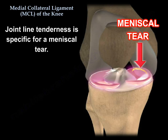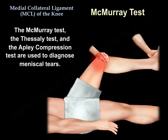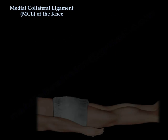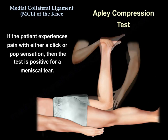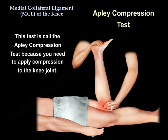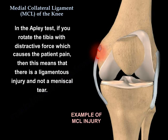Sometimes it is hard to differentiate between an MCL tear and a meniscal tear. Joint line tenderness is specific for meniscal tear. The McMurray test, the Thessaly test, and the Apley compression test are used for meniscal tears. With the Apley compression test, if the patient experiences pain with a click or a pop, the test is positive for meniscal tear. If you rotate the tibia with a distraction force and the patient experiences pain, then it is ligamentous injury and not a meniscal tear.